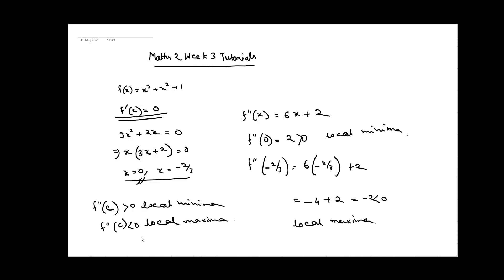Remember that local maxima or local minima can be global maxima or global minima, but not always. There can be many local maxima and local minima, but the global maxima is the maximum value of the function and global minima is the minimum value throughout the entire domain.